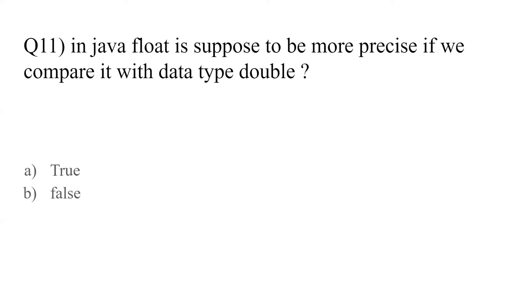Question number eleven: is Java float supposed to be more precise if we compare it with data type double? The answer is false. If we compare in terms of precision between double and float, double is the one which is more precise, not float.